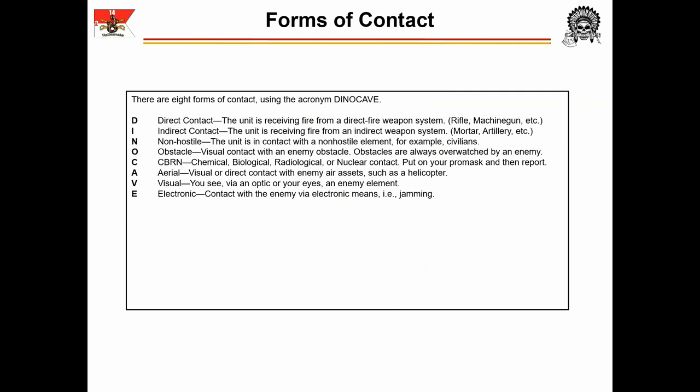Non-hostile contact is when the unit is in contact with a non-hostile element, for example civilians. This is often wrongly called a soft compromise — do not use the term soft compromise. Report the form of contact and the specifics in SALUTE format with a recommendation for how to proceed. Obstacle contact is visual contact with an enemy obstacle. As obstacles are always overwatched by an enemy, you can assume that if you approach the obstacle, the enemy will observe you. CBRN contact is chemical, biological, radiological, or nuclear contact.